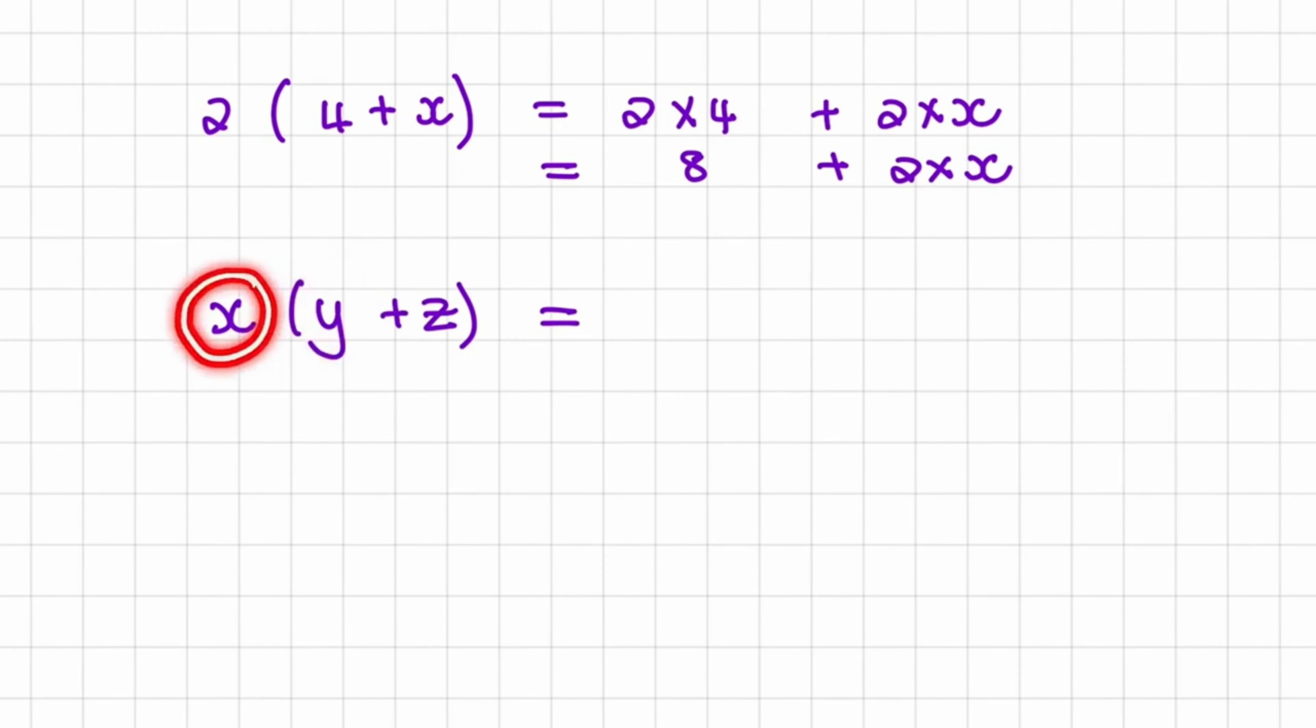So in this example, we are using 3 variables. And variables are letters in the place of numbers. So they represent any value or any number that we can think of.